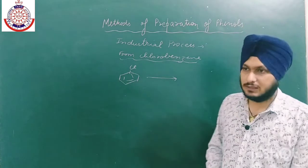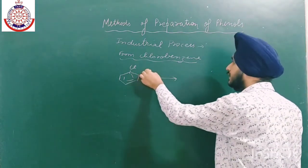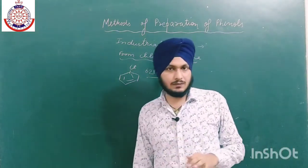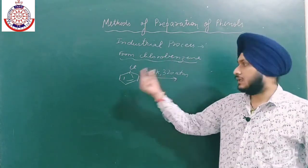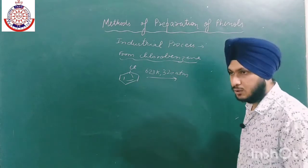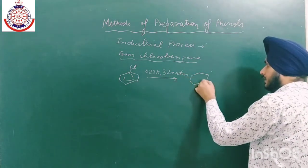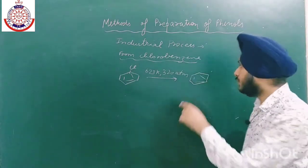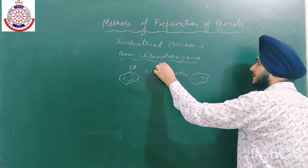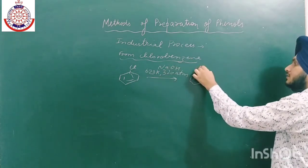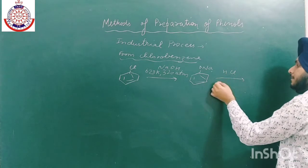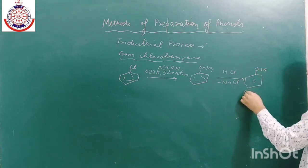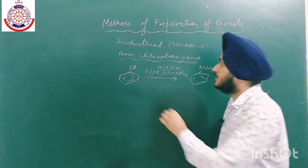The Dow process requires a temperature of about 623 Kelvin and pressure of 320 atm. If we want to carry out the reaction at lower temperature, we can add electron-withdrawing groups. We cannot convert chlorobenzene directly to phenol; we must first react it with NaOH to form sodium phenoxide, then NaCl leaves and phenol is obtained as the main product.